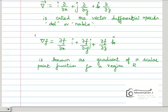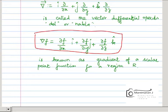The gradient is: if you take the partial derivative with respect to x times i-cap, plus partial derivative with respect to y times j-cap, plus partial derivative with respect to z times k-cap.